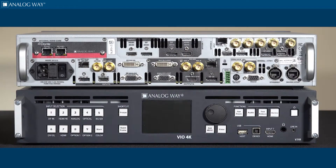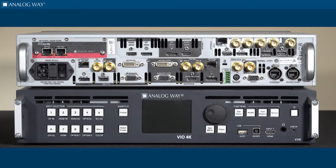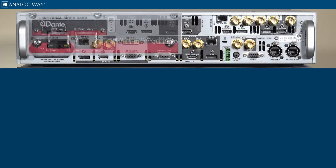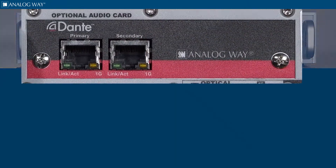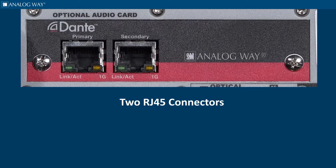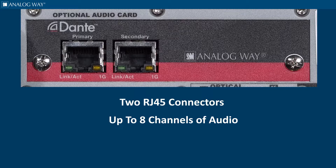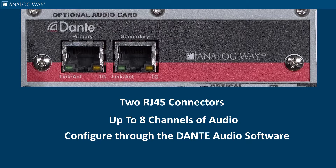The Dante Option card allows for audio over Ethernet. You have two RJ45 connectors that can be used for backup or loop-through capability. You have up to eight channels each way to embed the audio into the Vial 4K and extract it. You will need to set up the Dante network configuration through the Dante software.